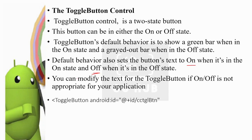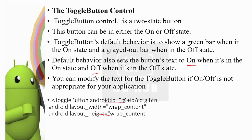For the toggle button, android:id is the parameter id. The width is wrap_content. To change the option, you use textOn and textOff attributes. For example, textOn is equal to 'stop' and textOff is equal to 'run'. We will put these values into the toggle button so that textOn and textOff replace the default on/off labels. This covers the basic button, image button, and toggle button.